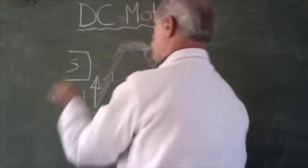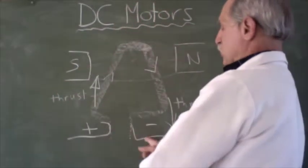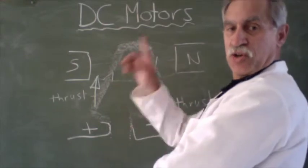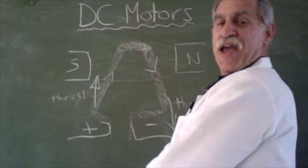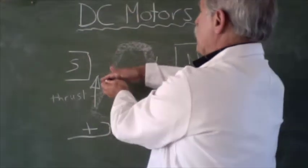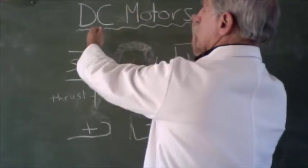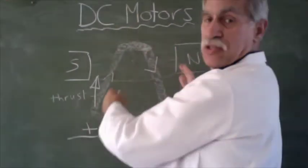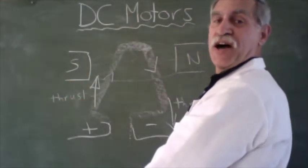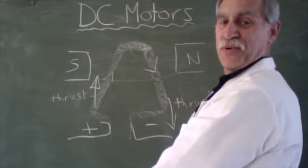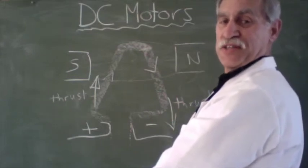So our motor, in this case, if there's positive, if there's negative, is going to turn in a clockwise direction. And like we said before, if we have a larger coil, stronger, bigger magnets, stronger magnets, more current, then we're going to get our motor to turn more. And that is the theory of DC motors.